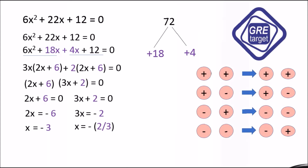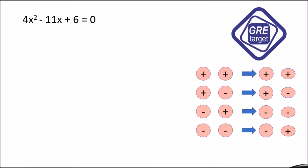Let's solve another example: 4x² - 11x + 6 = 0. The signs are negative and positive, so both values will be negative. First multiply the first and last terms: 4 × 6 = 24. We split -11 as -8 and -3, since -8 × -3 = 24 and -8 + (-3) = -11.